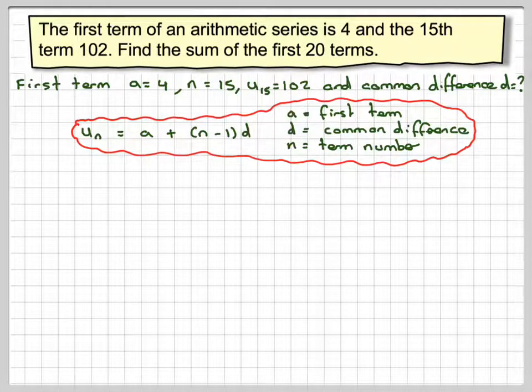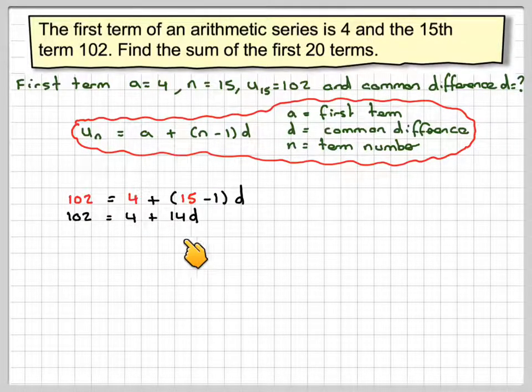So 102 equals 4, the first term, plus (15 minus 1) times D. N is 15. So we have 102 equals 4 plus 14D.